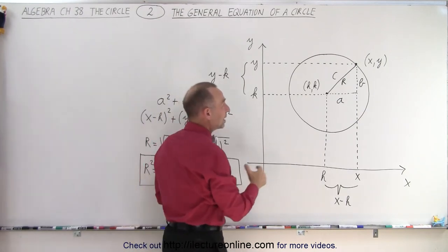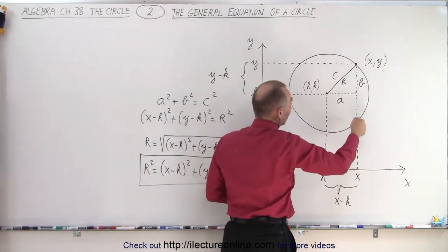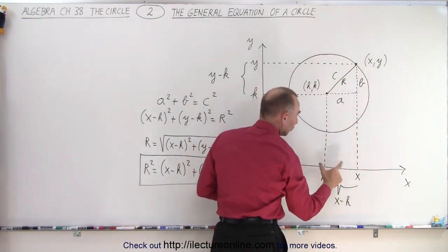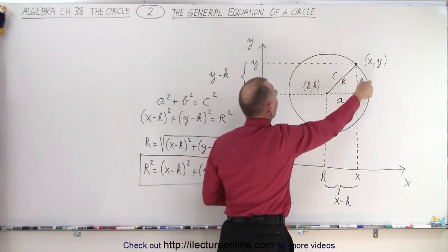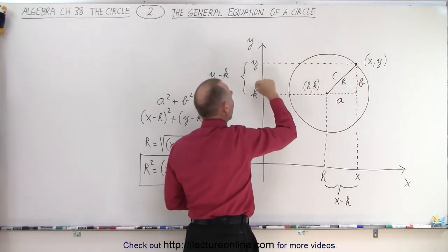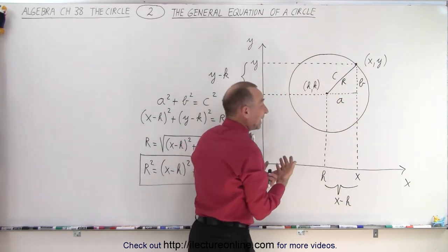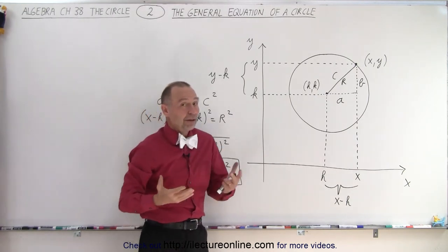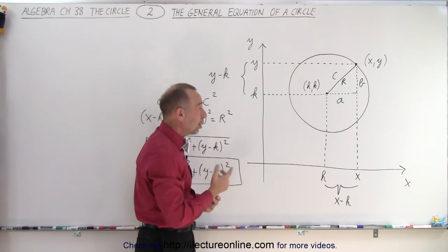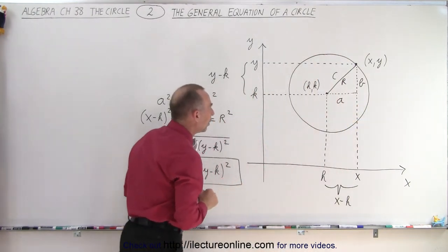But we can also see that the distance a is simply x minus h, regardless where x is. You can take that point anywhere along the circle. This distance will always be x minus h. And this distance right here, no matter where you put the point on the circle, that distance will always be y minus k. Now of course, if this point is lower than the center, then y minus k will be a negative number, but it doesn't matter since we're going to square that anyway. So negative number, positive number, it makes no difference since we're squaring both side a and side b. So it doesn't matter where x, y is. We can have any point on the circle and this will always work.